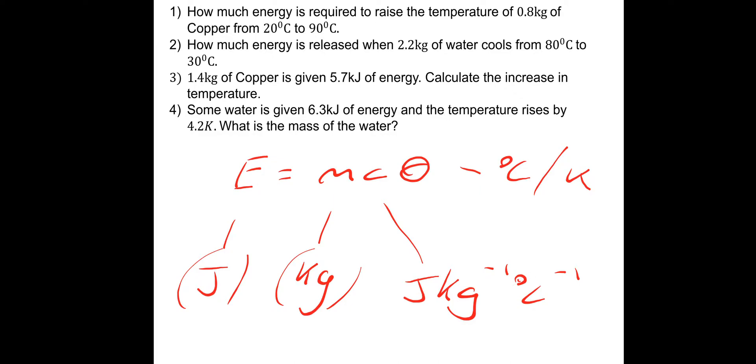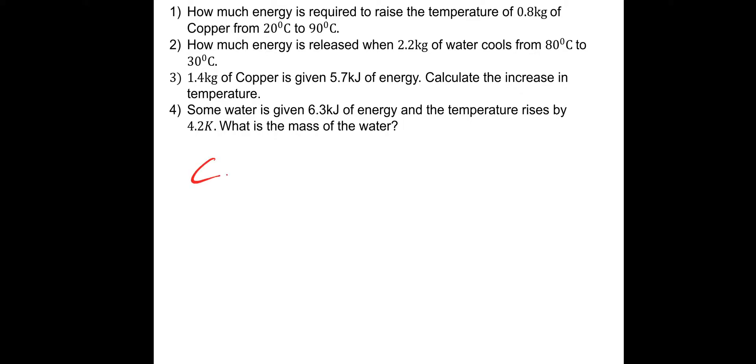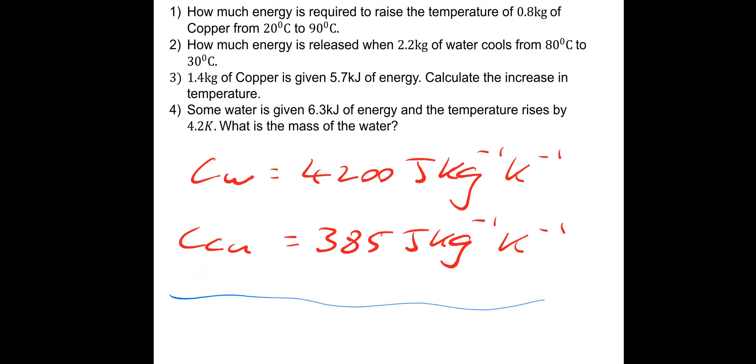Hopefully that's okay. I'm going to give you a couple of specific heat capacities which I asked you to highlight from a table in red from last lesson. We'll need the specific heat capacity of water, which is 4,200 joules per kilogram per Kelvin, and the specific heat capacity of copper, which is 385 joules per kilogram per Kelvin. Make sure you've got these written down.